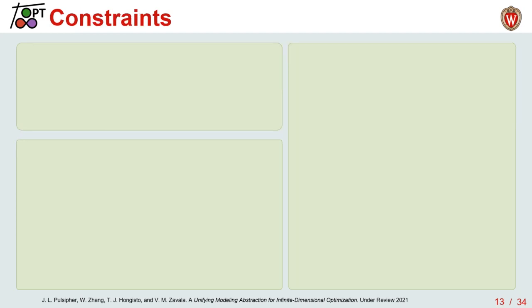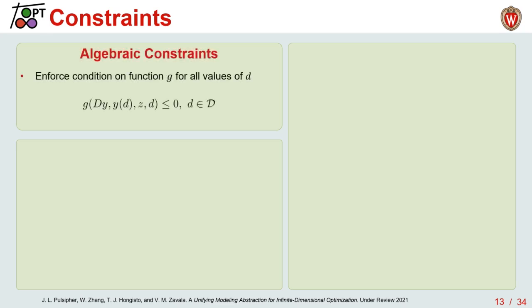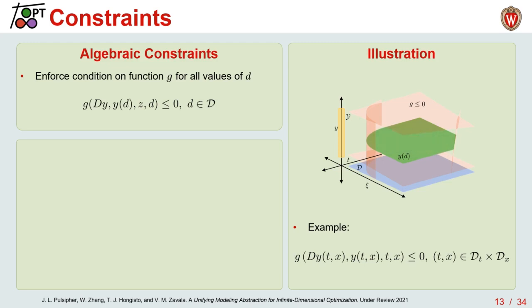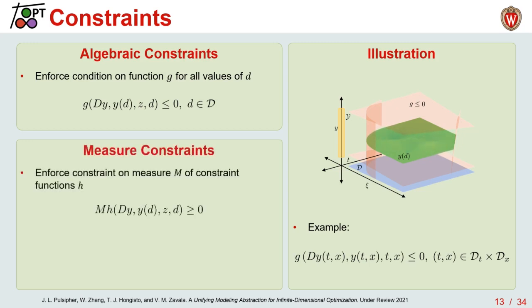Finally, to capture infinite dimensional problems, we have constraints, divided into two categories. The first, algebraic constraints, enforce a certain infinite dimensional function g over all values of its infinite parameters d — for example, a spacetime system where we're enforcing DAE constraints. Then we have measure constraints, where a measure operates on a constraint function h and enforces it to a certain threshold — such as chance constraints in stochastic optimization.